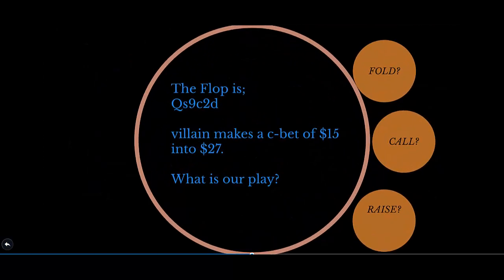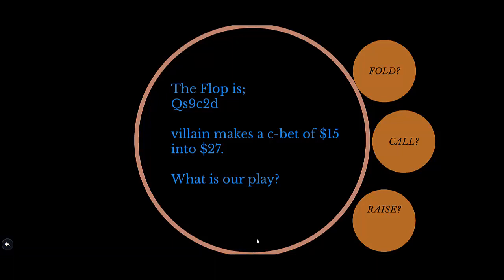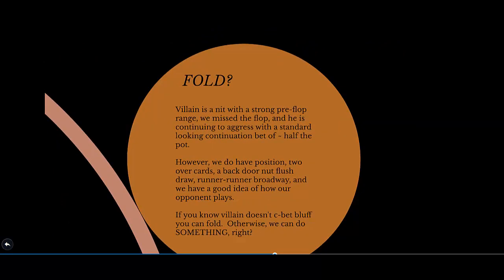Hero flat calls ace-king suited on the button. The flop is queen of spades, nine of clubs, two of diamonds. Villain makes a continuation bet of $15 into $27. We have ace of spades, king of spades — two overcards, a backdoor straight draw, and a backdoor nut flush draw. Do we want to fold? Villain is a nit with a strong preflop range. We missed the flop and he's continuing with a standard C-bet of about half the pot. However, we have position, two overcards, a backdoor nut flush draw, runner-runner Broadway, and a good read on how our opponent plays.